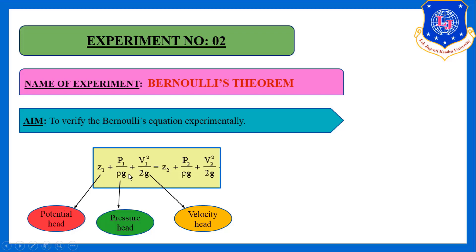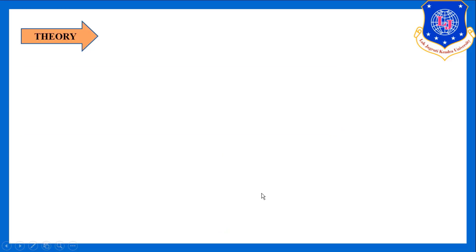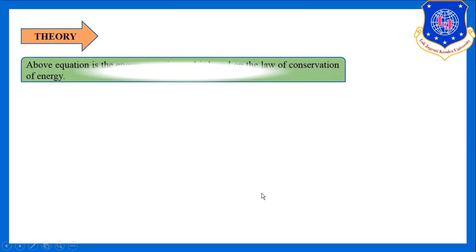This equation says that the summation of all the heads — or in terms of energy — the summation of all energy at point 1 is equal to the summation of all energy at point 2. So the equation says that the sum of energy at any point is constant, and that is what we have to prove experimentally.